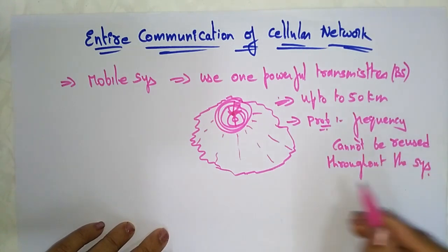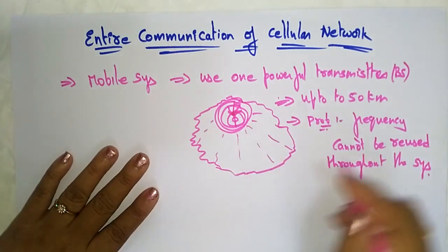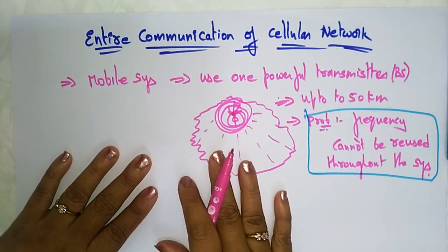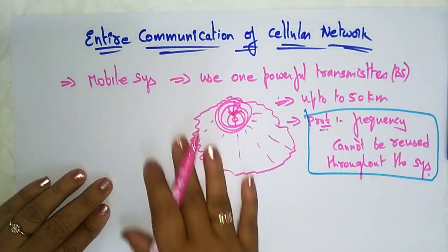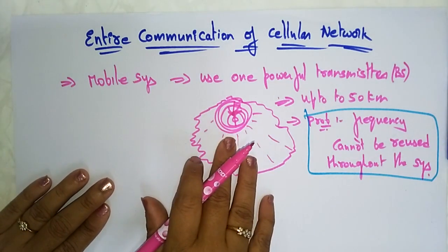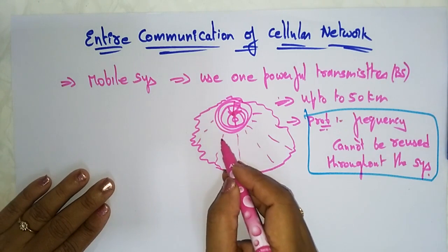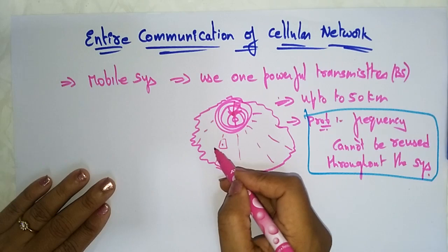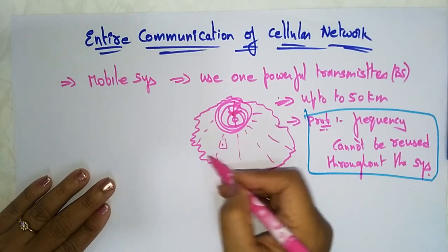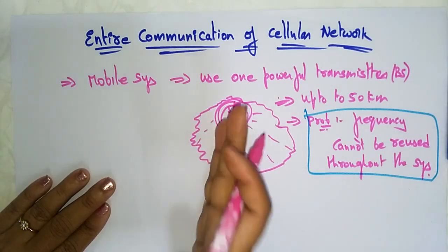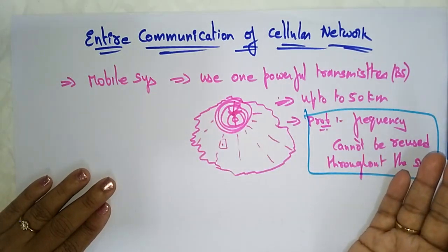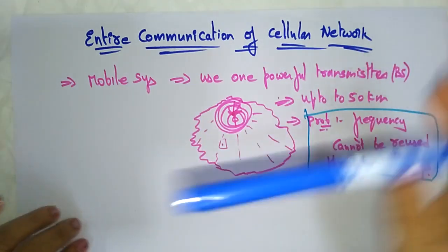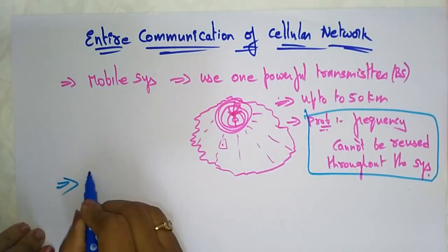That is the main drawback of the older mobile systems: only one powerful transmitter covering a large area, and the frequency cannot be reused throughout the system. Whatever frequency one person is using, if they end the call, that frequency cannot be used by another person. This is the main drawback, which is why the cellular system was developed.